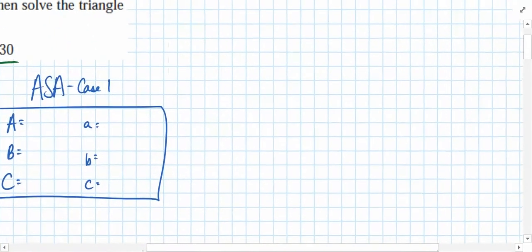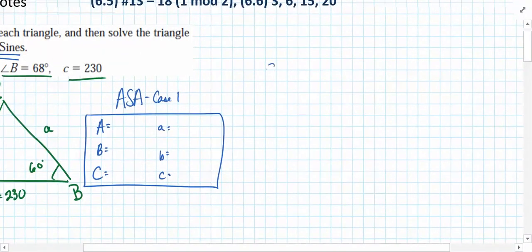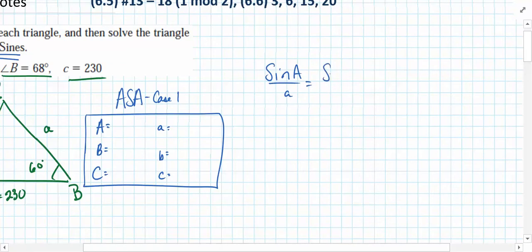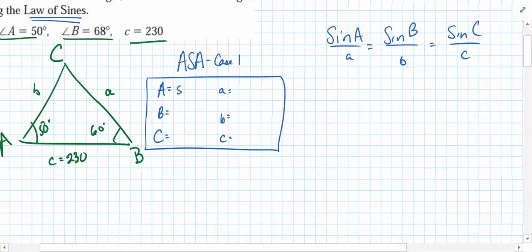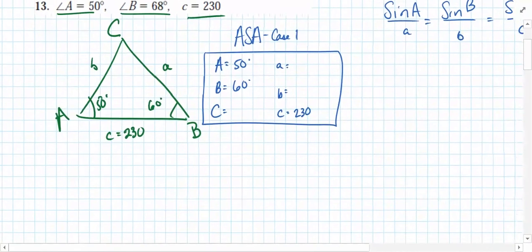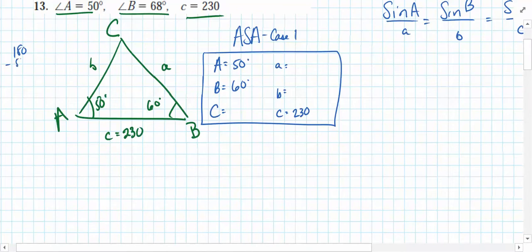Alright, so let's set up the law of sines. Law of sines tells us that sine of A over a is equal to sine of B over b which is equal to sine of C over c. Angle A we know is 50 degrees. Angle B we know is 60 degrees. Side length A is unknown, B is unknown, C is known, that's 230 units. Before we start filling in our data, let's go ahead and find our missing angle measure here for angle C. We know that 180 degrees minus 50 is 130, 130 degrees minus 60 is 70 degrees, so therefore C has to be 70 degrees.